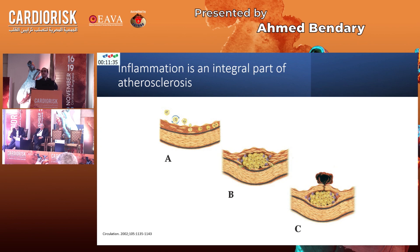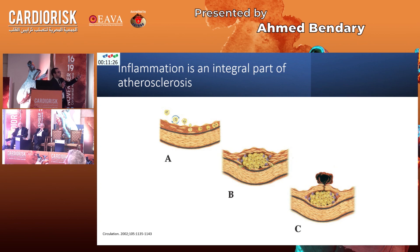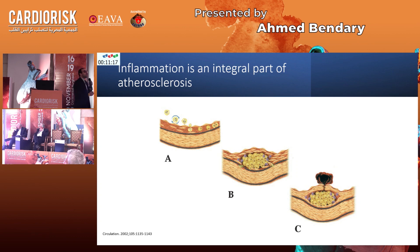Suffice to know that everything in the atherosclerotic process speaks about inflammation. First, the recruitment of leukocytes within the nascent atherosclerotic plaques is mediated through selectins and integrins — those are inflammatory markers. Also, the monocyte colony stimulating factor, which is responsible for the maturation of macrophages and scavenger receptor engulfing of LDL to become foam cells.